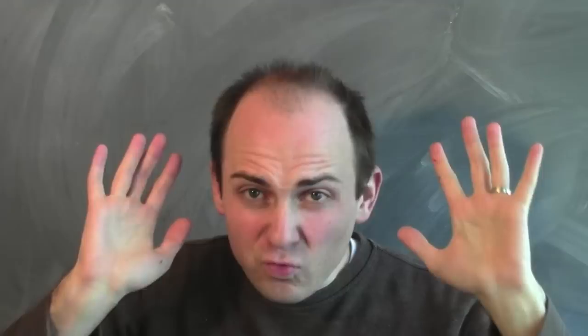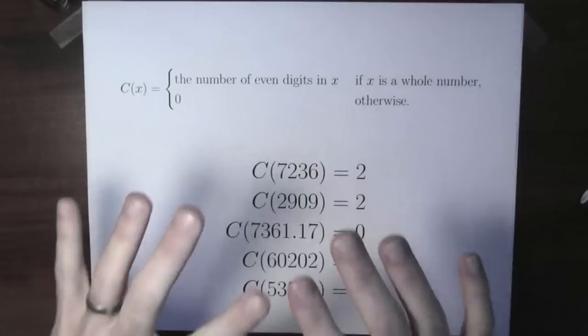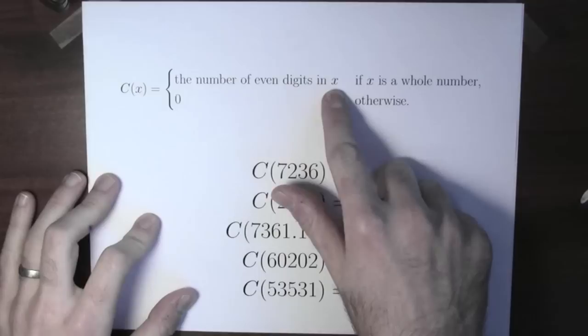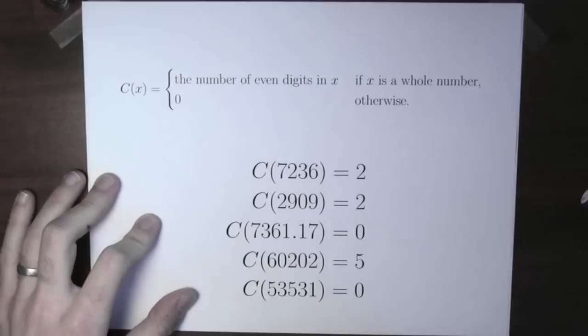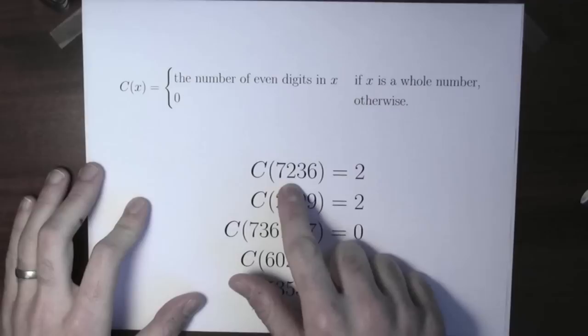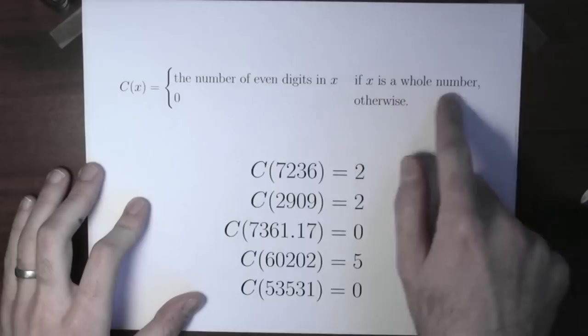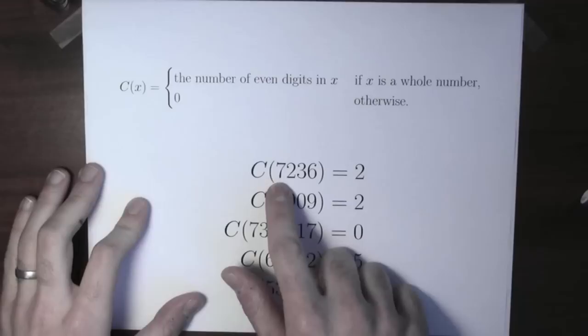In principle, functions can be really complicated. All the examples we've seen are doing various kinds of algebra — adding, subtracting, multiplying, dividing. But here's a much crazier example: C of x is the number of even digits in the number x when x is a whole number, and 0 otherwise. So c of 7,236 is 2. It's a whole number, and counting the even digits: 7 is odd, 2 is even, 3 is odd, 6 is even — so 2 and 6 are the two even digits, and the value is 2.